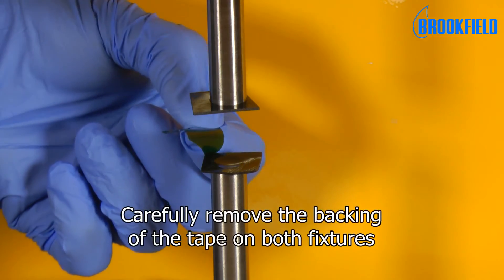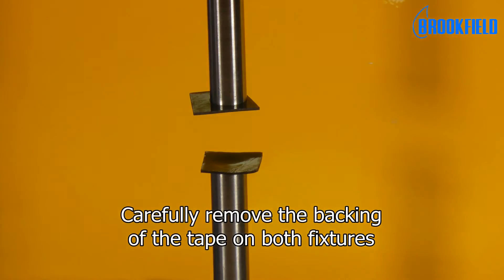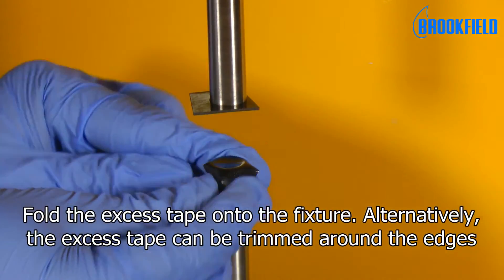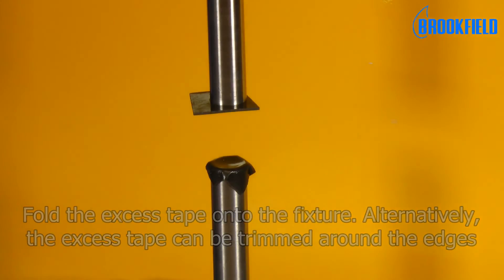Carefully remove the backing of the tape on both fixtures. Fold the excess tape onto the fixture. Alternatively, the excess tape can be trimmed around the edges.